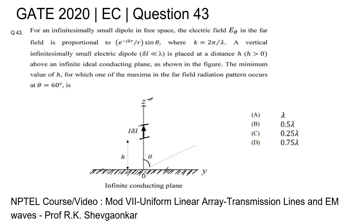We need to find the minimum value of h to get a maximum of the far-field radiation pattern. Specifically, we want one of the maxima in the far-field pattern to occur at θ = 60 degrees. Let's say there is a far-field point P, and we need to find the minimum value of h so that we get a maxima at this point.